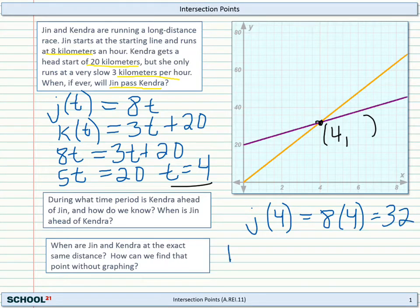And just to make sure, let's check K of 4. It equals 3 times 4 plus 20. And indeed, 3 times 4 is 12 plus 20, that's also 32. So we can go ahead and write in the graph now, 32. And that's the intersection point of our two functions.